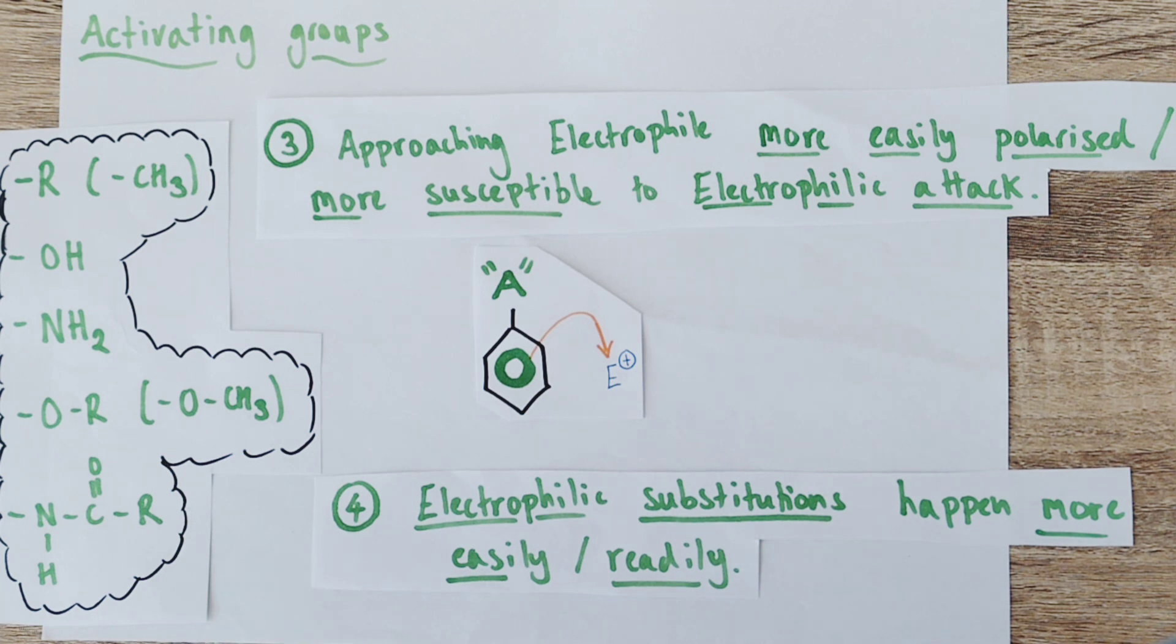Or if the electrophile itself is already quite strong, it's got a positive charge, and is already a good electron pair acceptor, the benzene ring which has been activated will simply be more susceptible to electrophilic attack, and will therefore react more easily. This will mean that an electrophilic substitution will happen more easily and readily at a lower energy configuration, or lower energy requirement, than a normal benzene ring would need.